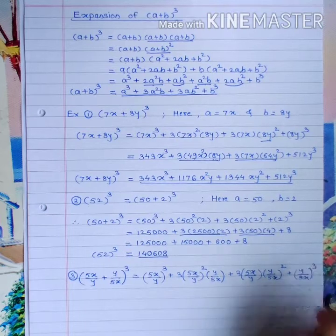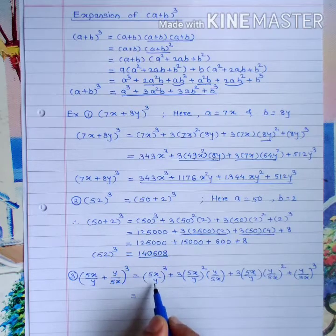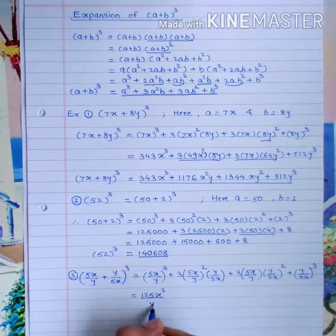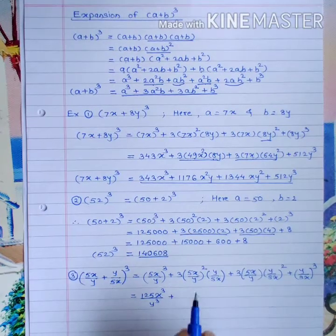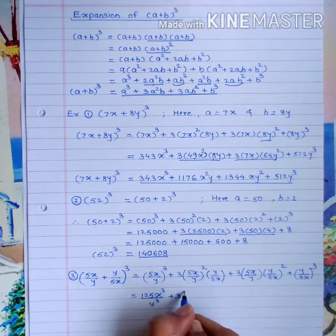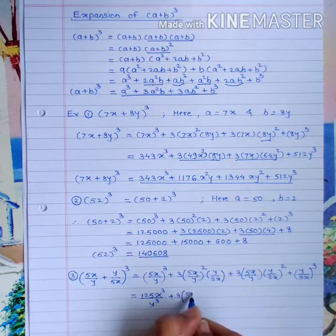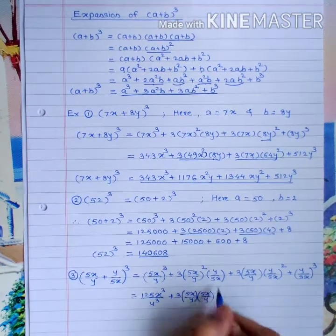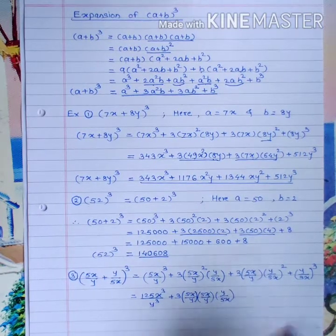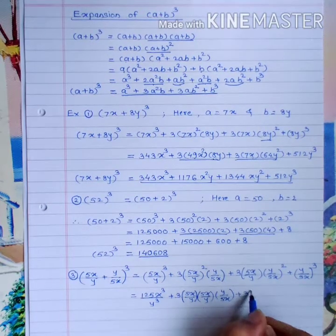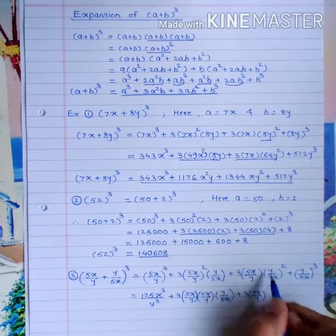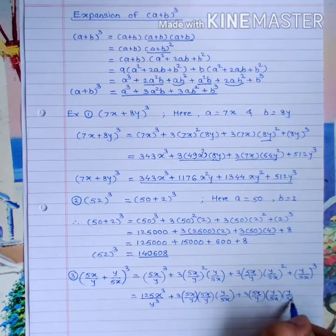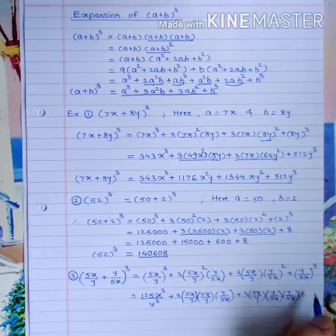Cube of 5x/y: 5³ = 125, so we get 125x³/y³. For the second term, 3 × (5x/y)² × (y/5x): squaring 5x/y gives 25x²/y², then multiplying by y/5x simplifies the expression.